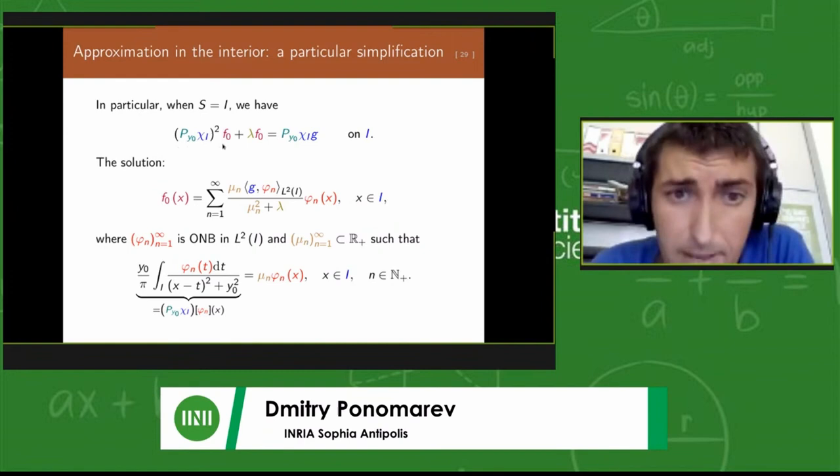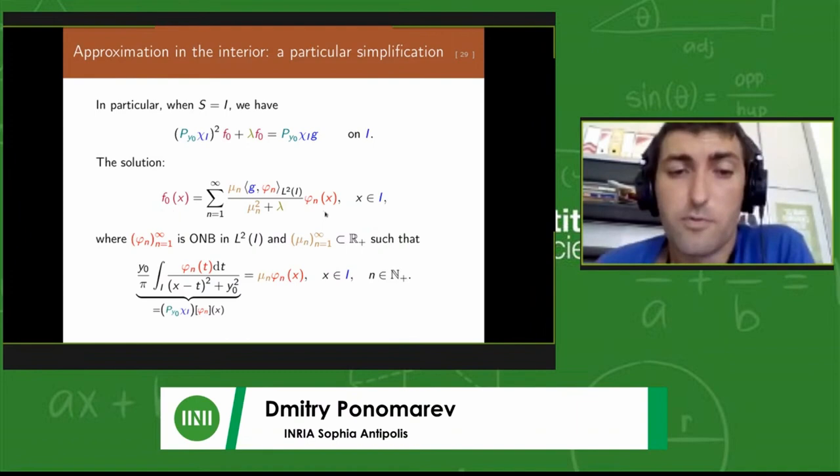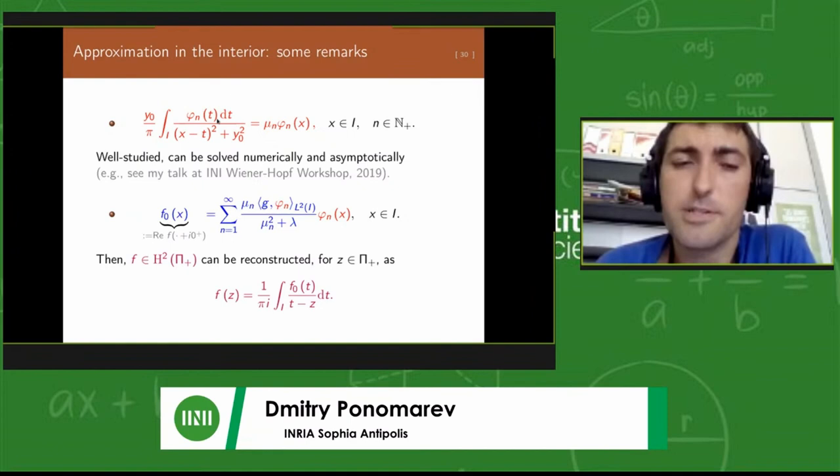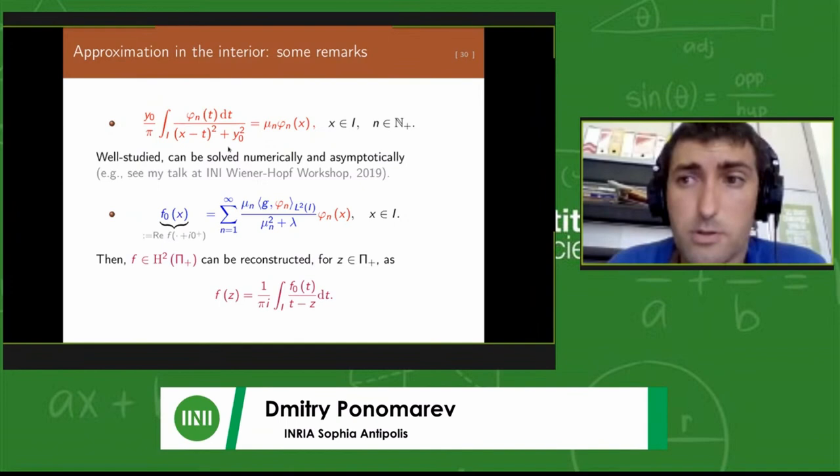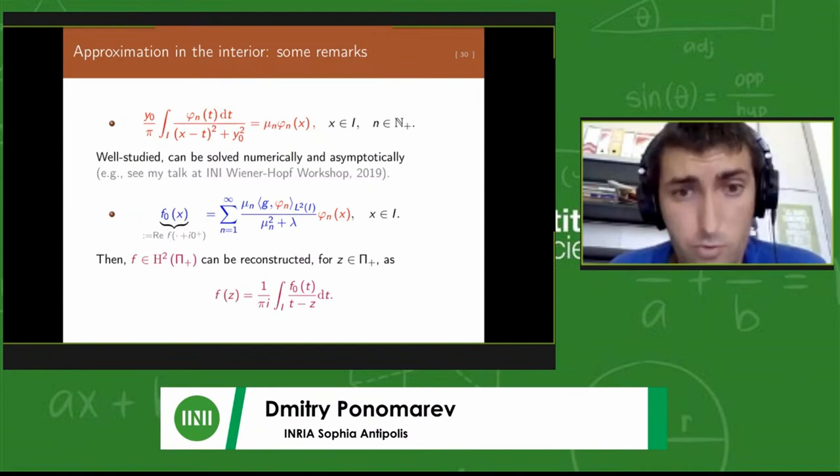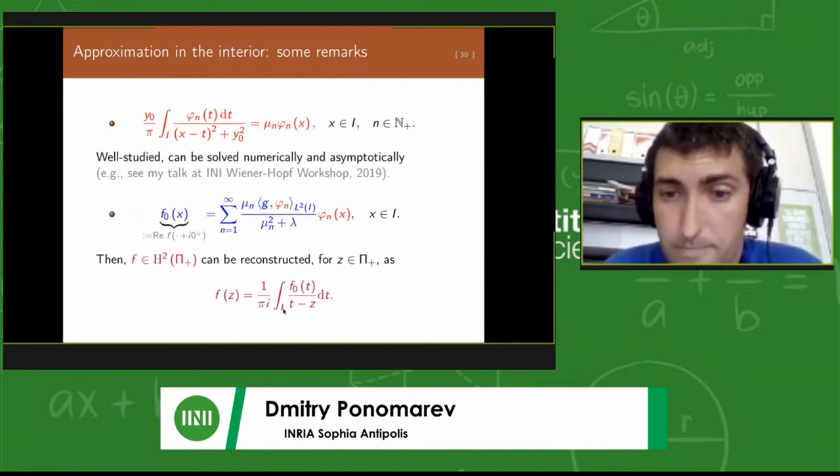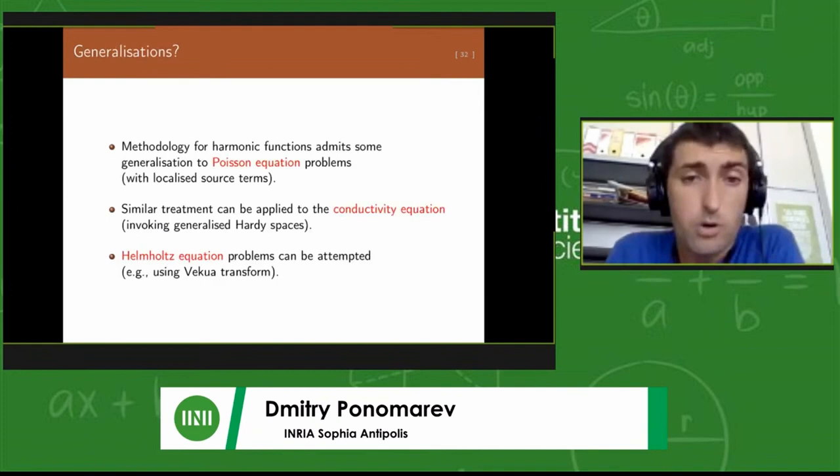This leads to an integral equation which is written here in operator form. F0 is just the real part of the boundary value of f, and Py0 is the Poisson operator, which is convolution with the Poisson kernel. Lambda again has to be chosen to satisfy this constraint on F0. In particular, when s is equal to i or smaller than i, this case can also be reduced to the equality case. This is a quadratic operator equation, and it can be solved by spectral decomposition of this truncated Poisson operator.